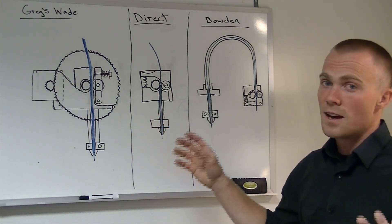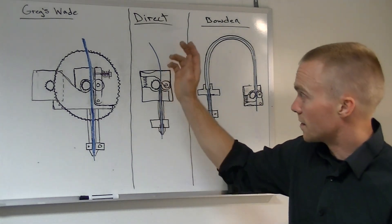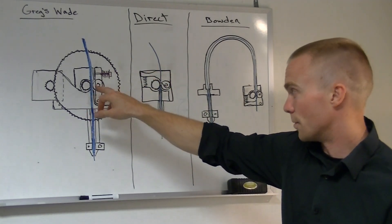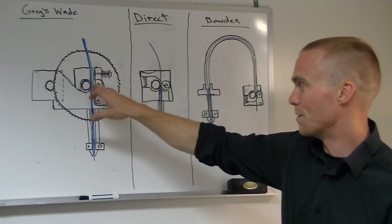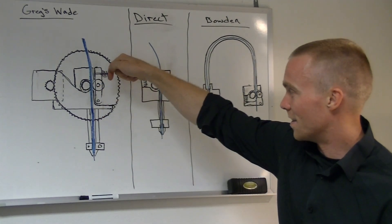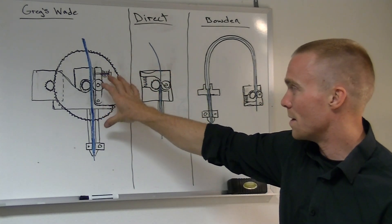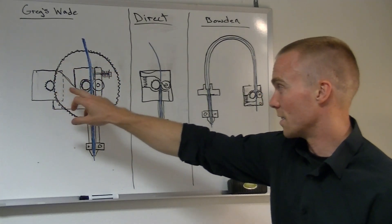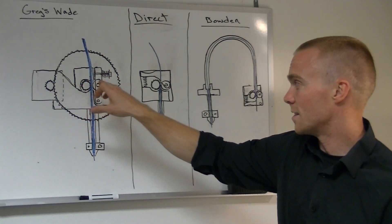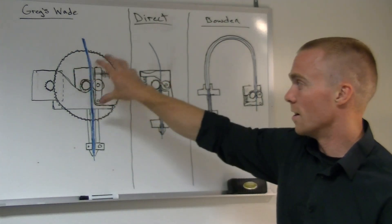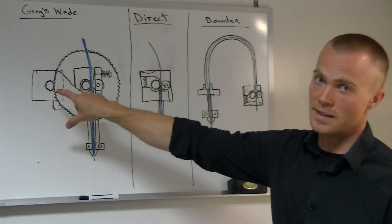The Greggs-Wade extruder is not very different from that at all. It's the same setup. You have a drive gear or you have a hobbed region that is creating a nip force and pushing the filament down in, but the main difference is that rather than the drive gear being directly connected to the stepper motor, it's on a bolt or shaft going through a larger gear and then that gear is being driven by the stepper motor.